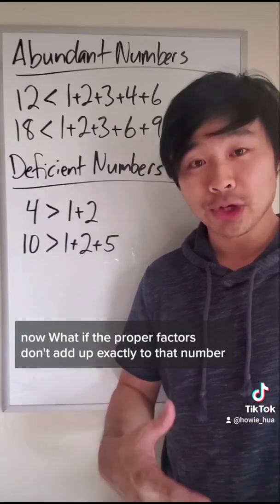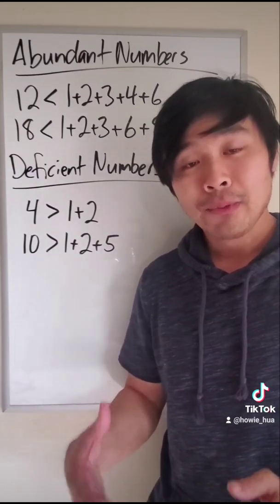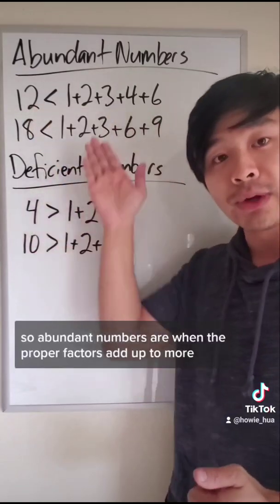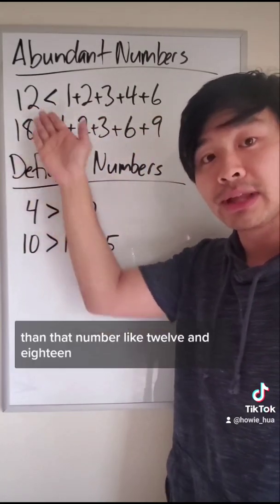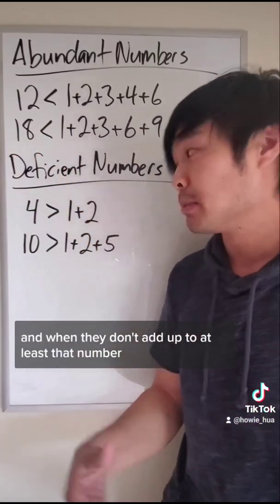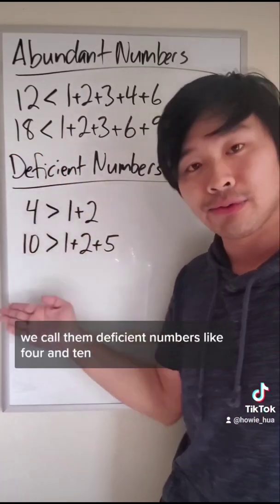Now what if the proper factors don't add up exactly to that number? We call those abundant and deficient numbers. So abundant numbers are when the proper factors add up to more than that number, like 12 and 18. And when they don't add up to at least that number, we call them deficient numbers like 4 and 10.